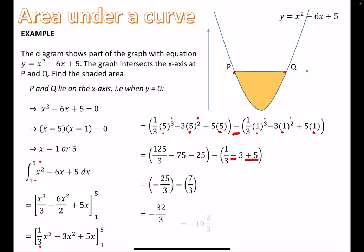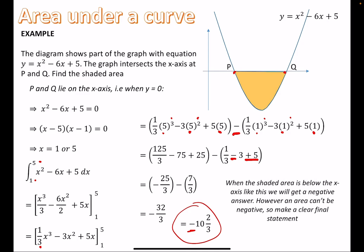All of this simplifies to −25/3, and subtracting 7/3 gives −32/3, which is −10⅔. This is negative. We can't have negative areas, but there's a reason it's negative — the shaded area is below the x-axis. When the shaded area is below the x-axis, you will get a negative result, which is actually a good check that you've done it correctly. However, an area cannot be negative, so the final statement is just the positive value: the area is 10⅔ square units.